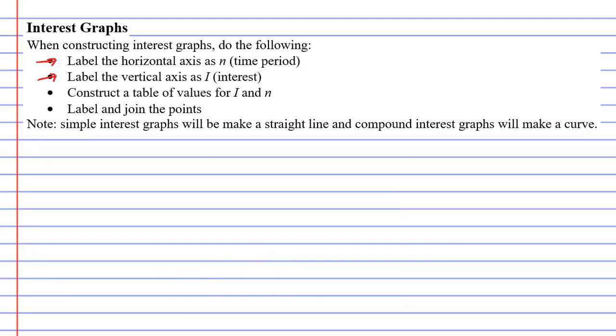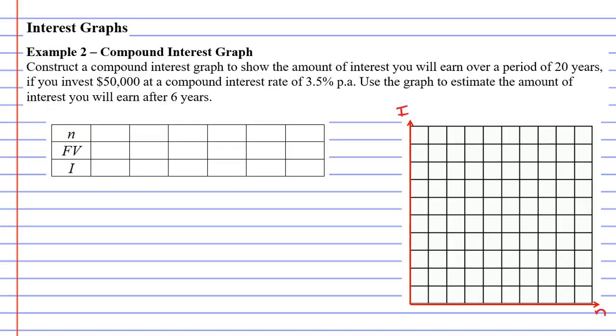We need to construct a table of values for i and n. Because we're doing this over a period of 20 years, we want to reach the number 20. I think we need to go up by 4s this time. So 0, 4, 8, 12, 16, 20. Perfect, we reached 20 right at the end.